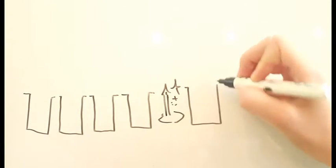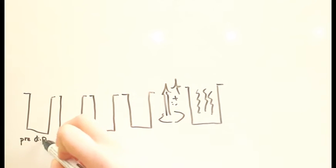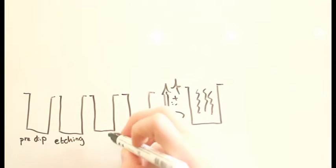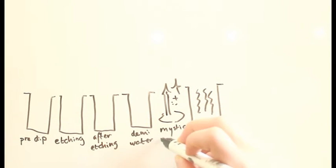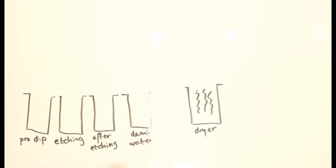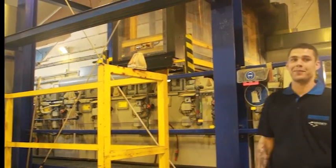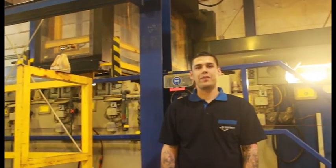The etching bath has a few different parts to it. There's the pre-dip bath, the etching bath, the after etching bath, the demi-water, the mystical island bath and the dryer. Okay. Maybe not that one. Oh, and this is Gonzalo. Remember him. He'll be up again.